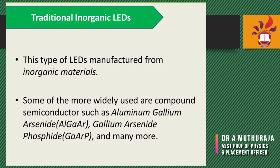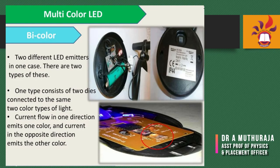Multicolor LEDs can be seen on many advertisement boards and at the front of buses. Two different LED emitters are placed in one case, emitting different colors. There are two types: one consists of two dice connected to the same lead frame, and another where current flowing in one direction emits one color and current in the opposite direction emits the other color.